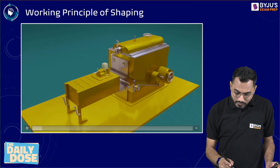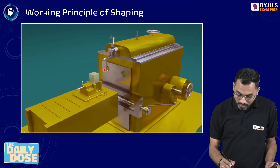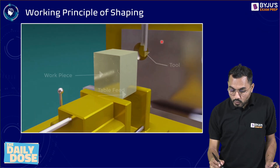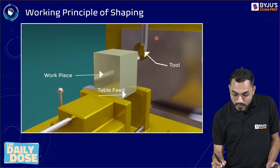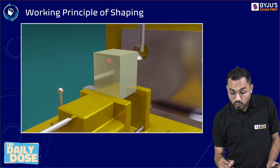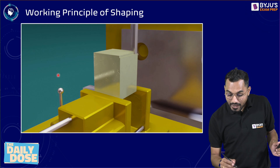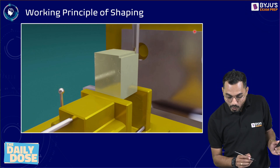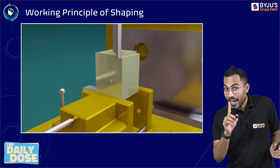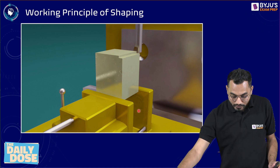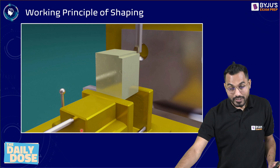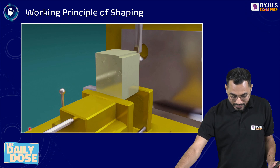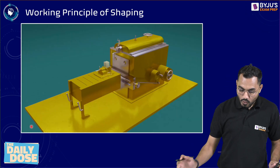Let's understand this with the shaper machine animation. Here is the tool and the workpiece. The tool moves in the forward direction — that is the cutting stroke. It comes in contact with the workpiece performing cutting, then returns as idle. You can observe that feed is given to the work table after each stroke.